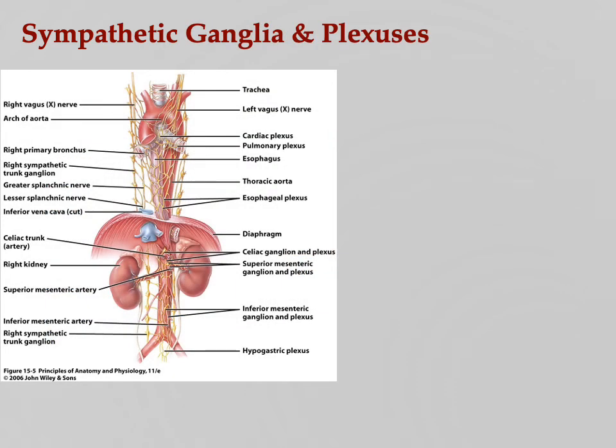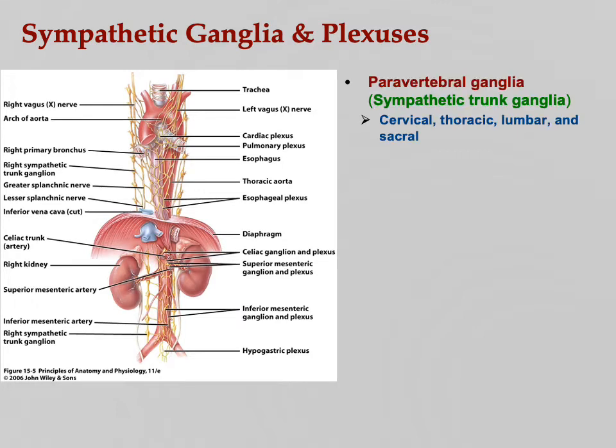Let's look at some of these sympathetic ganglia and plexuses. Plexus means a braid or tangle in Greek, so in some cases we have a whole bunch of nerve fibers bunching together. They may not technically be ganglia, but they serve the same purpose.